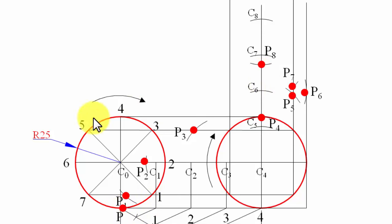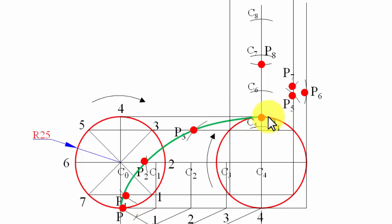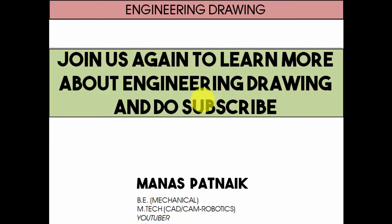Now we have all the points — we've tracked point P as the circle rolled horizontally for half a revolution and then vertically for the remaining half. Joining all these points gives us the complete curve: the first half revolution produces one cycloid and the remaining half revolution produces another. That's it. If you have any doubts, write them in the comment section below. If this tutorial added value to your knowledge of engineering drawing, recommend this channel to your friends. Next time we'll look at a problem based on hypocycloid — until then, this is Manas Patnaik signing off, take care, have a great day, and keep drawing.